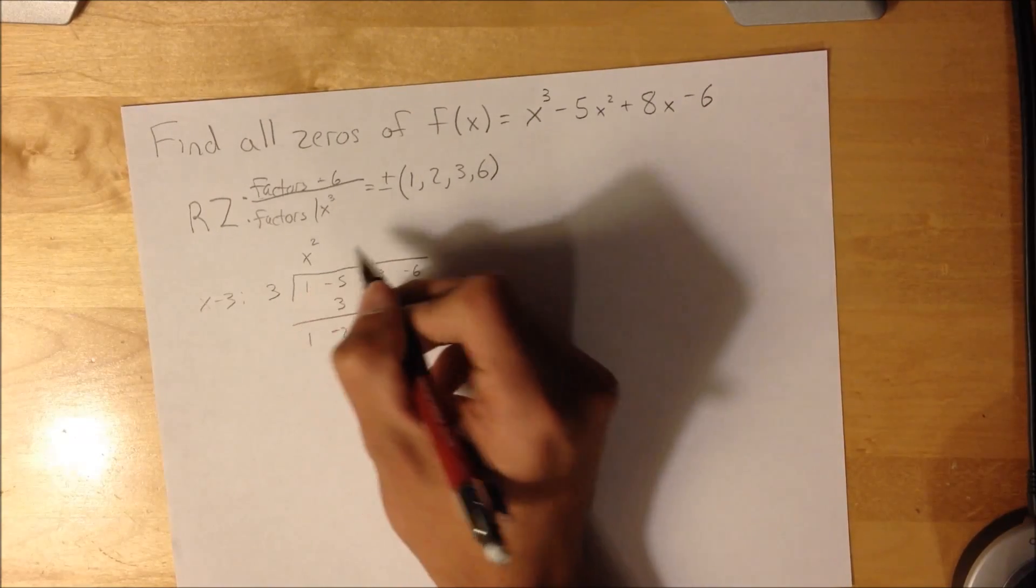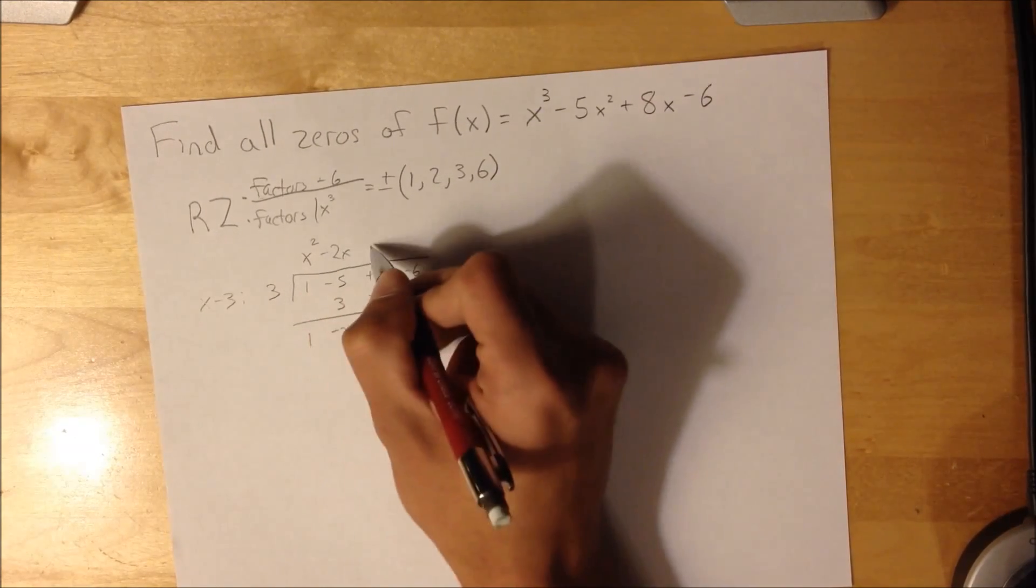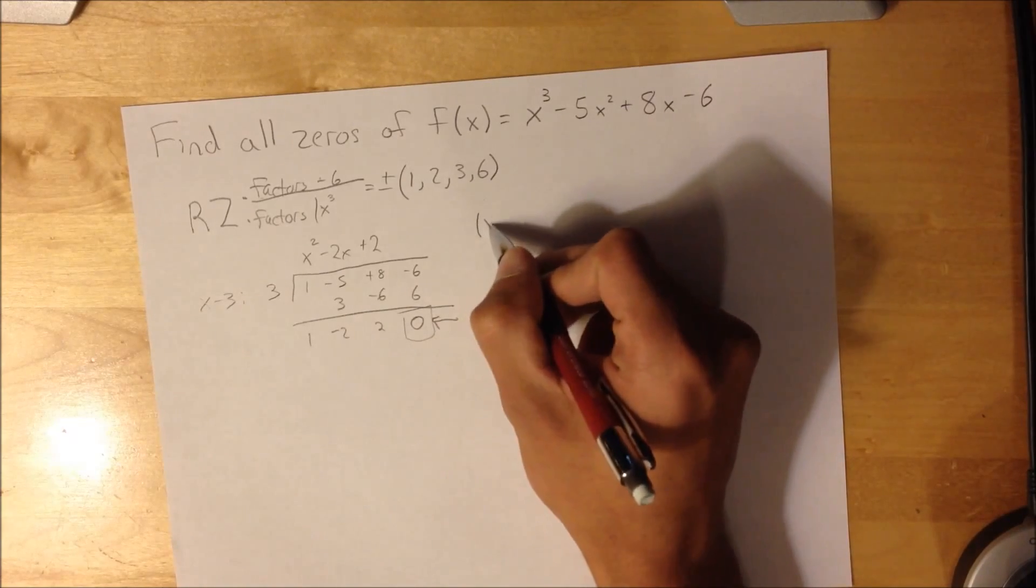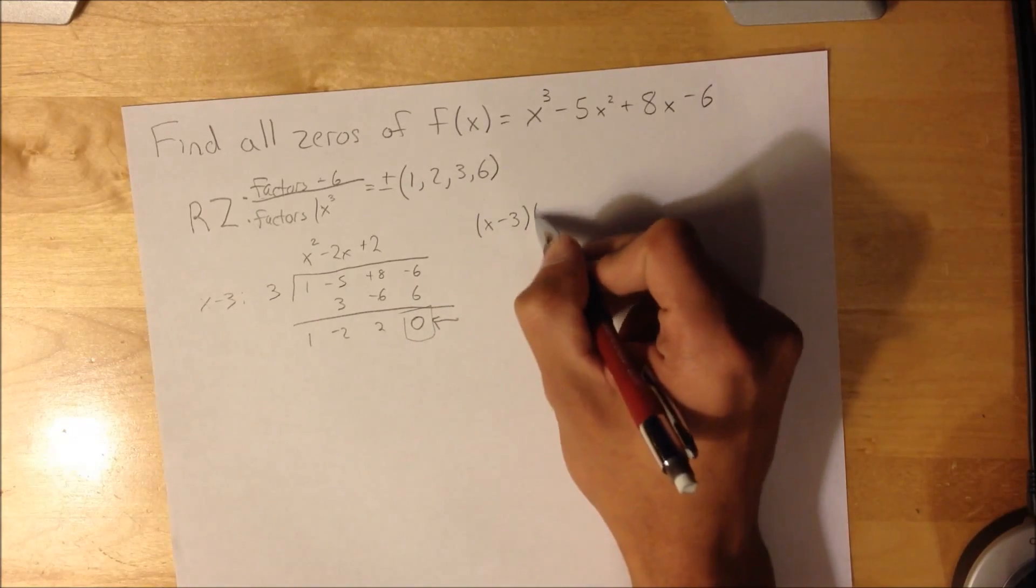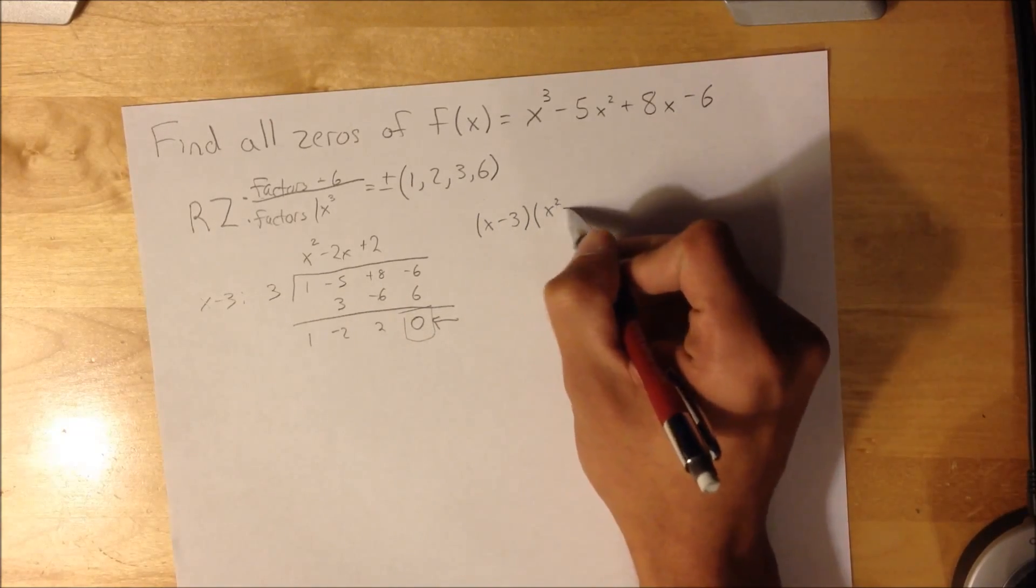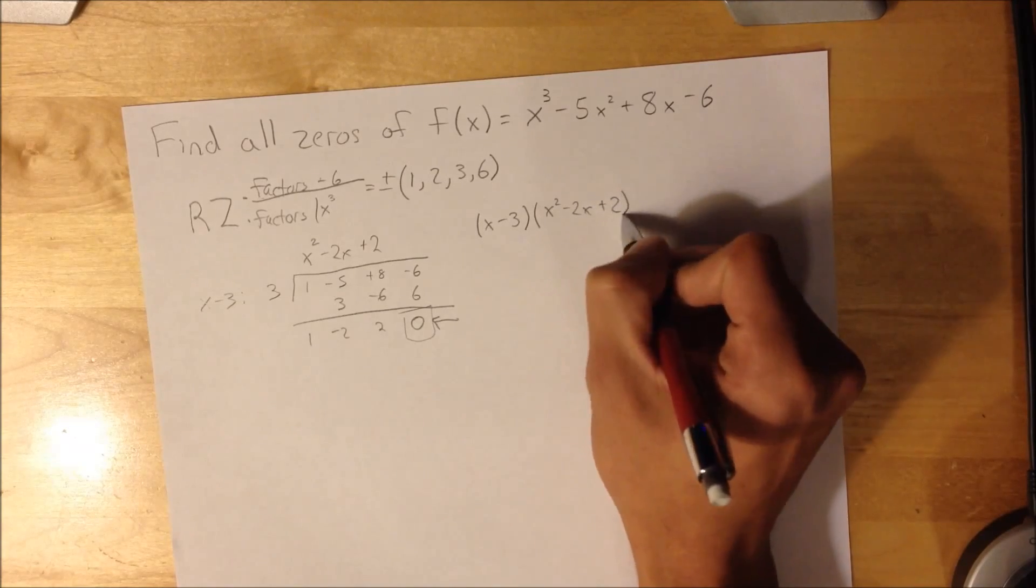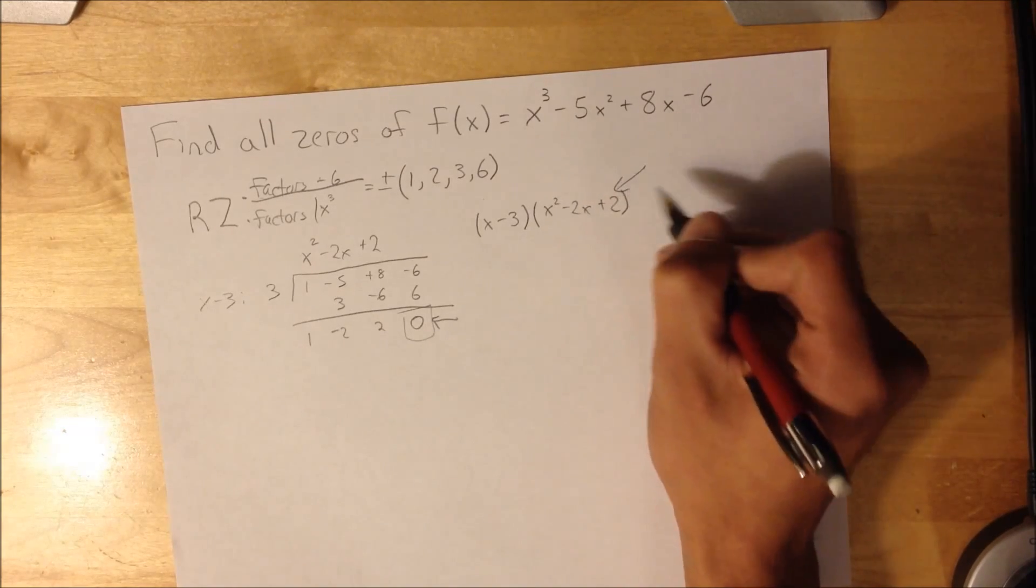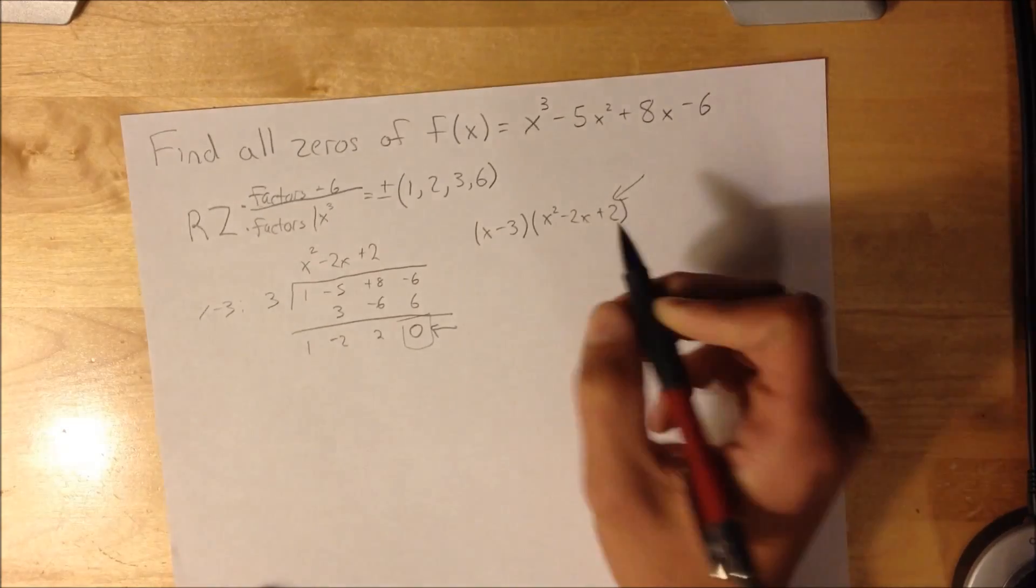Bring these up, it's going to be x² - 2x + 2. Alright, so now you're left with x - 3 and x² - 2x + 2. Now this needs to factor into smaller terms,